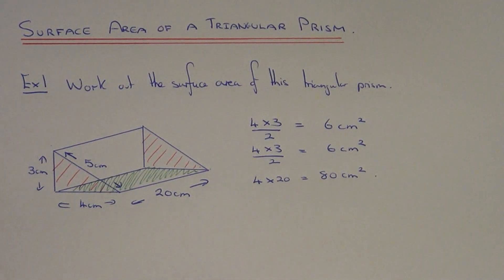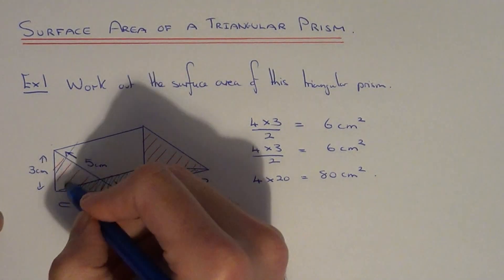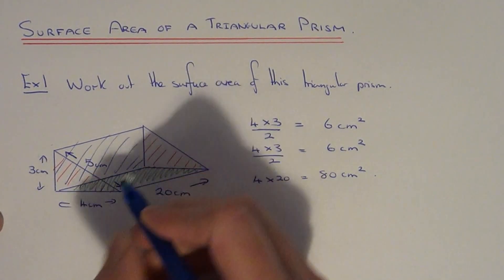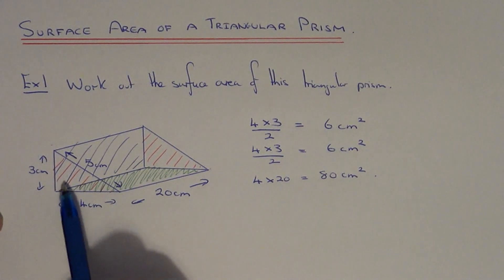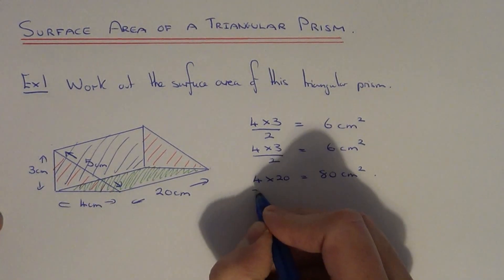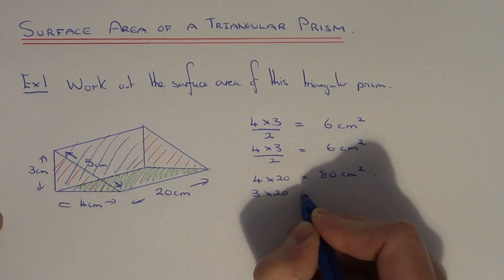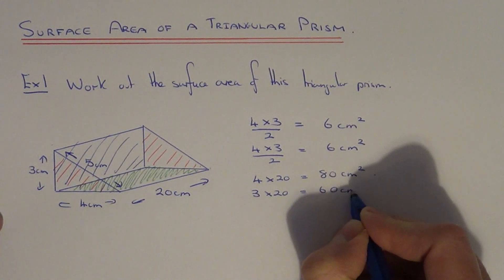Let's do the one now at the back of the triangular prism. So this one will be 3 times 20, which is 60 cm squared.